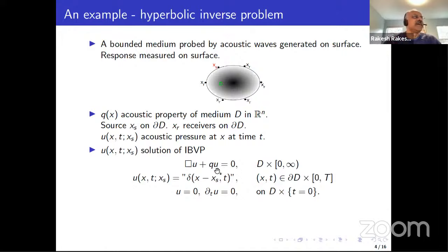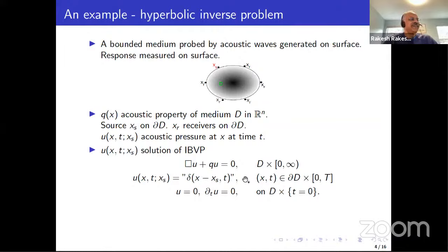U is the acoustic disturbance at point X at time T corresponding to the source at X sub S. This disturbance is affected by the physics Q — the acoustic property — through the wave equation. U is the solution of this initial boundary value problem: the wave equation on the domain in space and time. The source is modeled by a delta function boundary condition — an explosion at X sub S at time T equals zero. Before the explosion, there's nothing happening in the medium, so U and U sub T are zero for T less than zero.